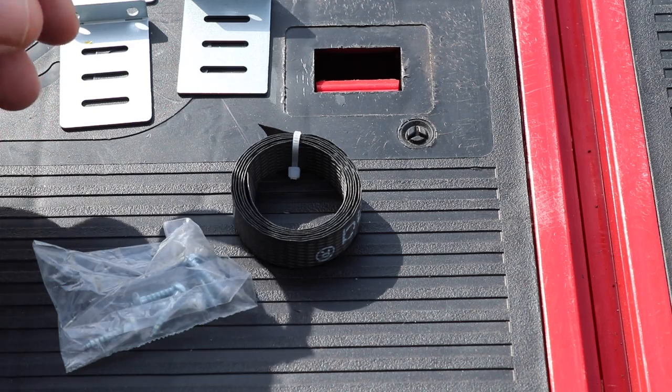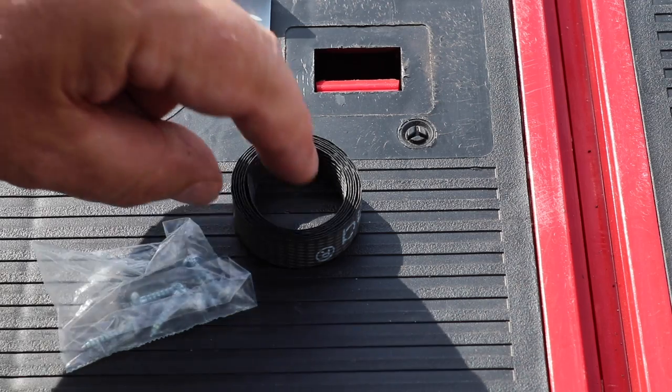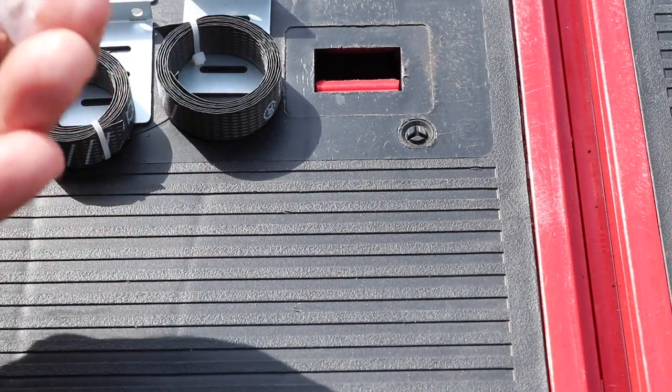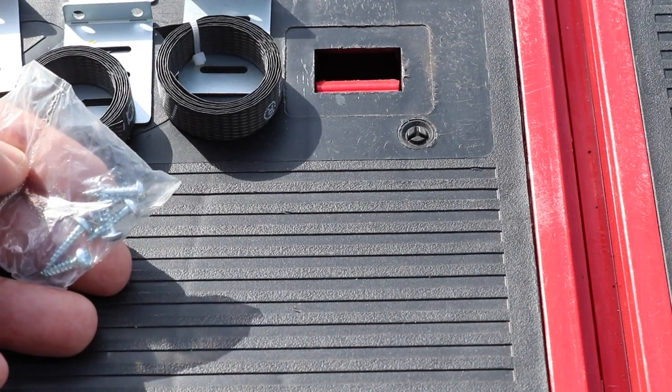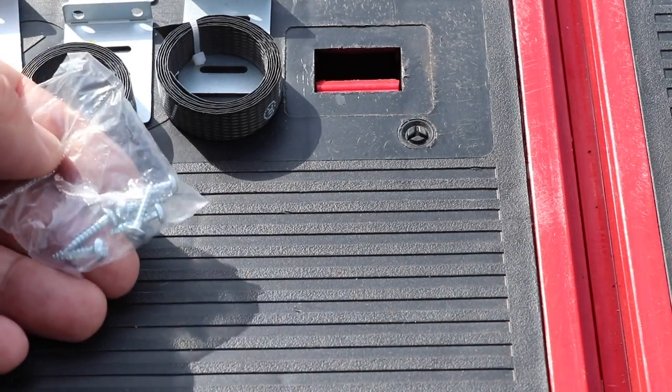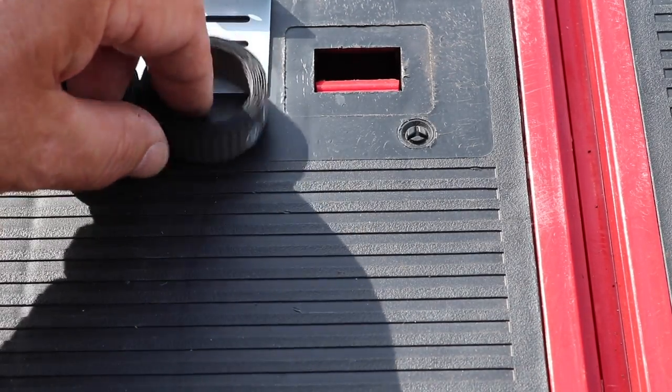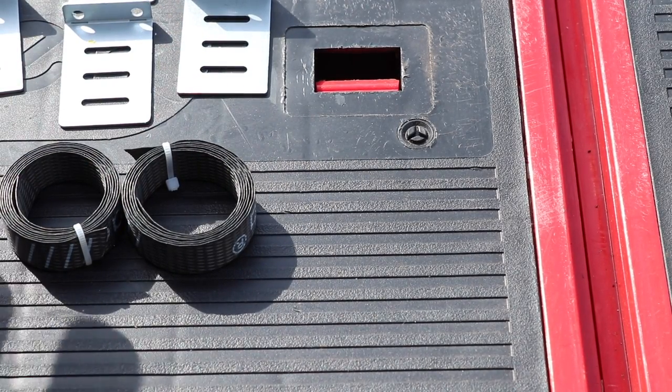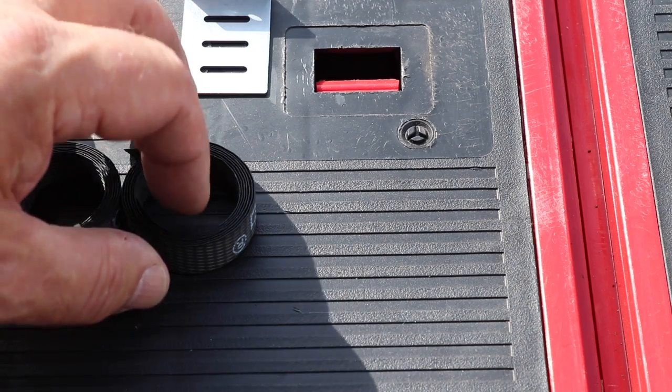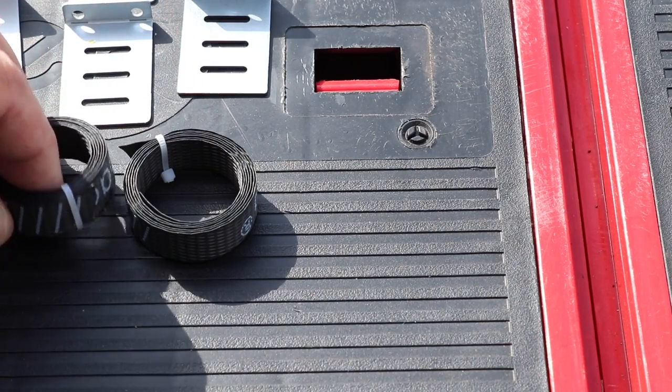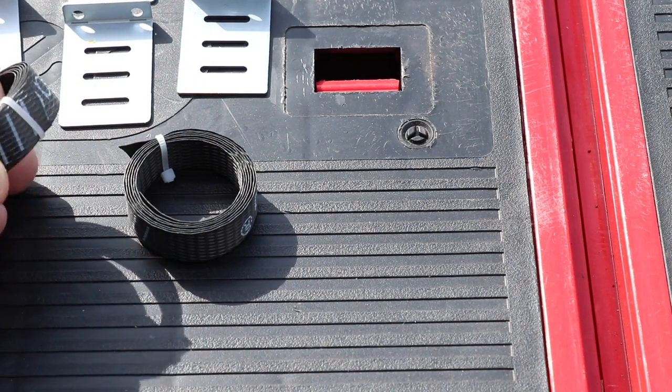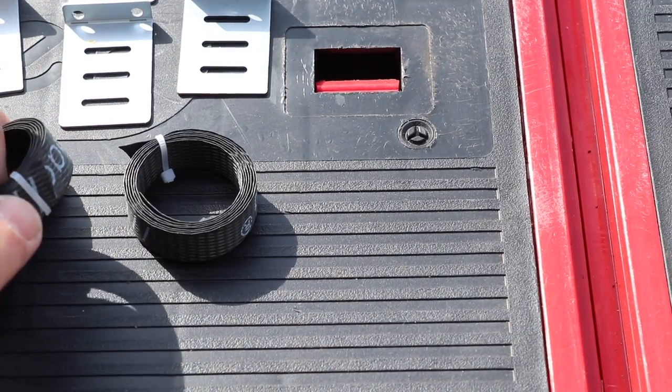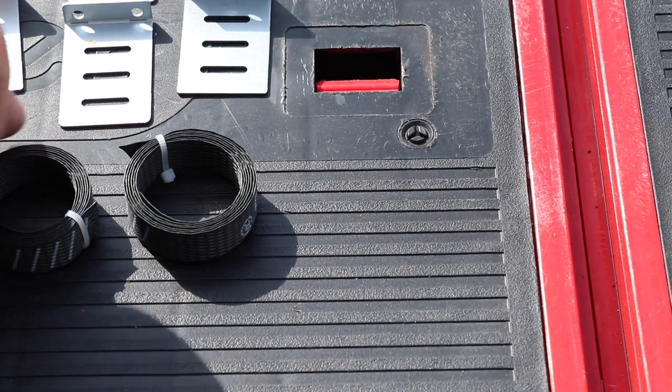We've got this nylon-like what I would call packing tape or packing stripping, two of those, and we've also got some screws. Now we're going to disregard the screws because they're too long. I didn't mention at the beginning of the video, when we talked about tools and kit, you're going to need a pencil or a marker pen and also you're going to need a craft knife in order to cut these zip ties off.